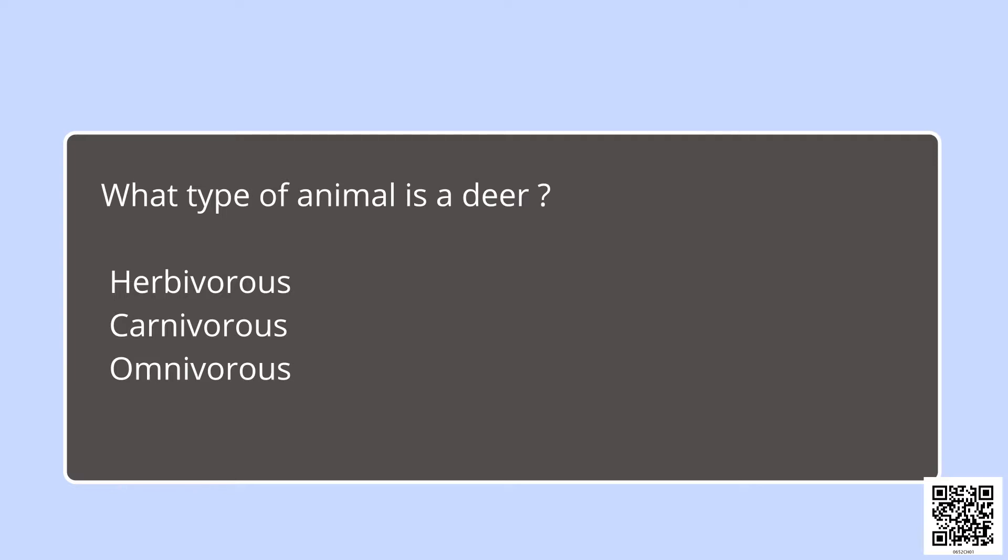Next question: What will we get if we put gram seeds in water and then keep them in a wet cloth? Options are germinated seeds, same seeds with no change. And the right option is germinated seeds. Next question: What type of animal is a deer? Herbivorous, carnivorous, omnivorous? Right answer is herbivorous because it eats plant leaves and grass.